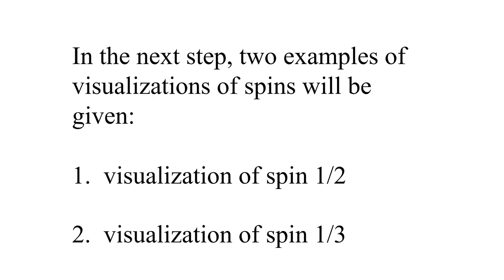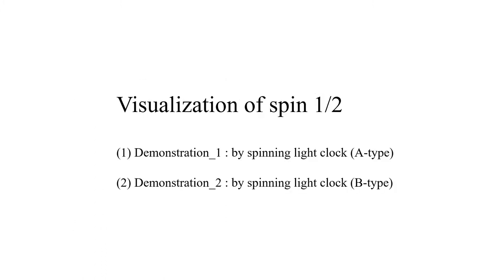In the next step, two examples of visualizations will be given. One is the visualization of spin half, and the other is the visualization of spin 1 over 3. For spin half, the first demonstration uses the A-type spinning light clock and the second uses the B-type.